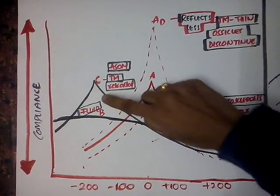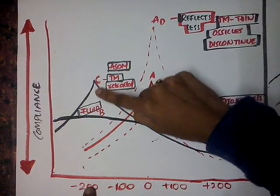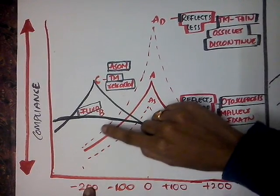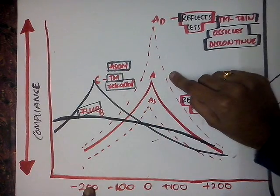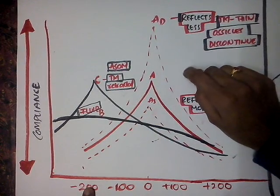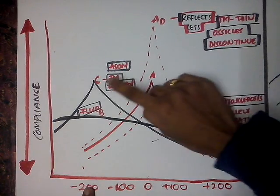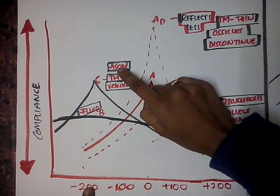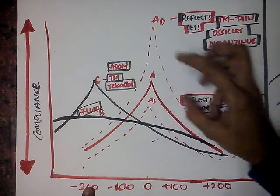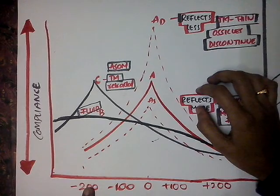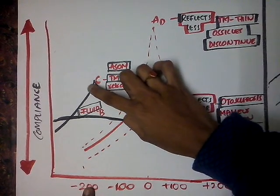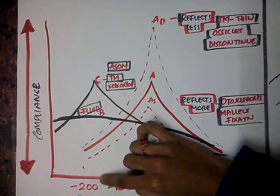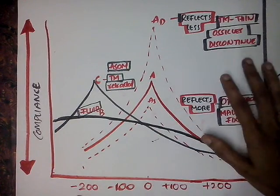Next comes C. The peak — maximum compliance — is at minus 200. This indicates that the pressure we generated, minus 200, became equal to that of the pressure in the middle ear, meaning there is negative pressure in the middle ear equal to minus 200 mm of pressure. This is seen when the tympanic membrane is retracted, as in eustachian tube obstruction in ASOM, where obstruction generates negative pressure, giving maximum compliance when we apply minus 200 pressure to the external auditory canal.